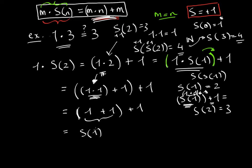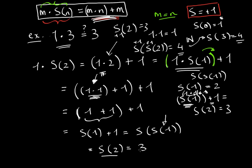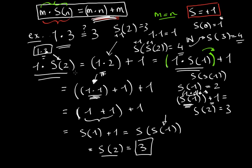So going back to our proof: we had the successor of one, and adding another one gives the successor of the successor of the successor of one. Now that we are down to one value we can compute: the successor of one is two, and the successor of two is three. Looking at both ends — we originally started with one times three — and we now have three on the other side. We have just proven that one times three is indeed three. This is Peano's multiplication rule, analogous to the addition rule discussed previously.